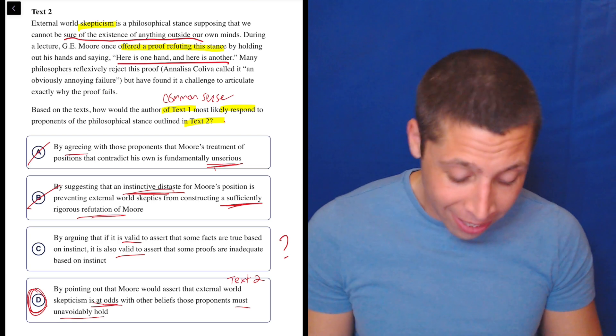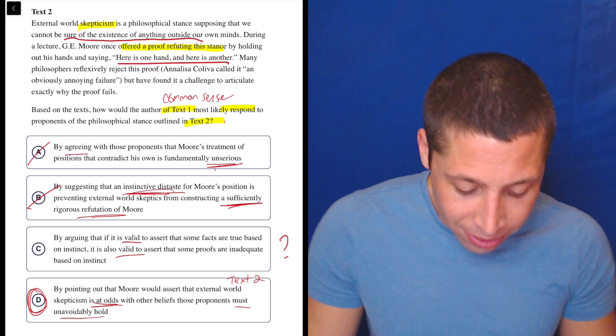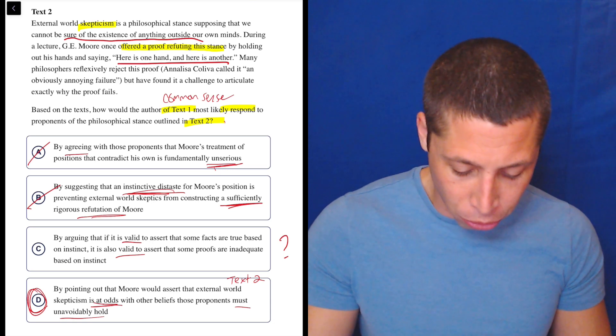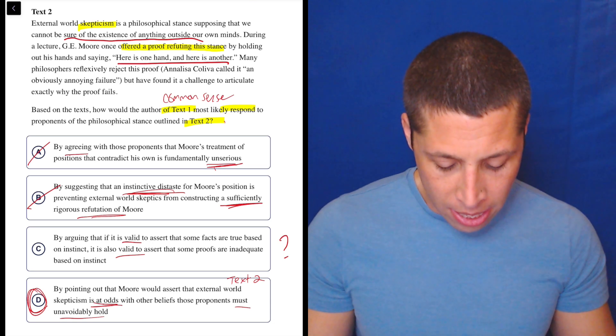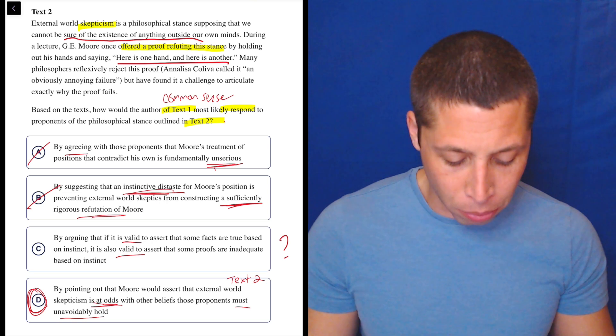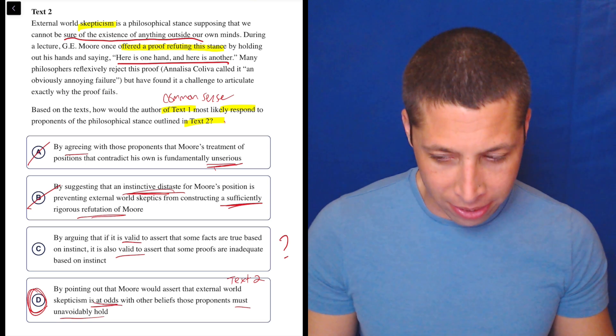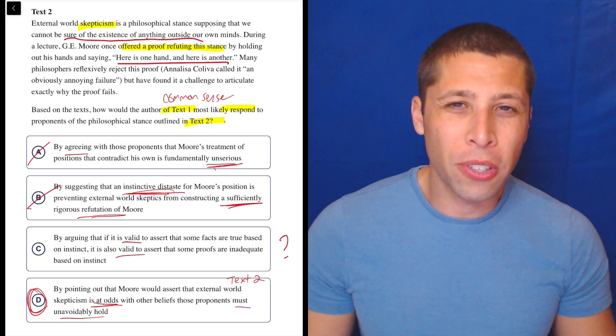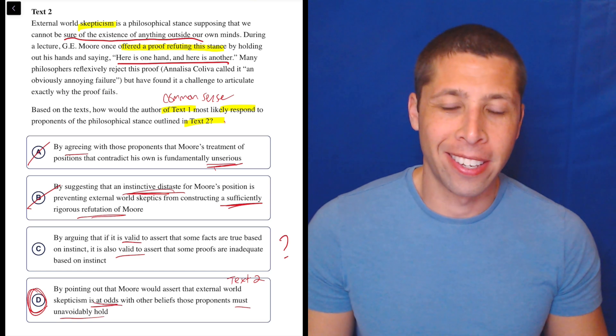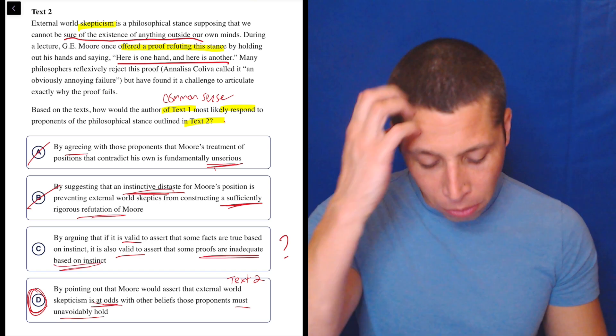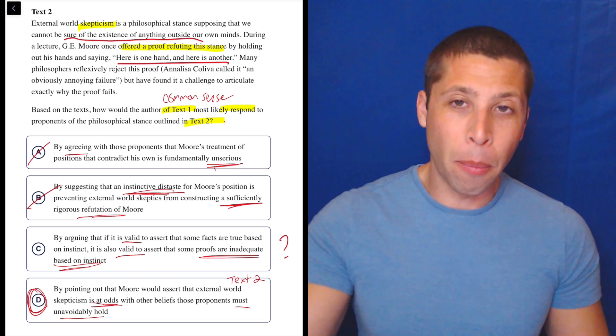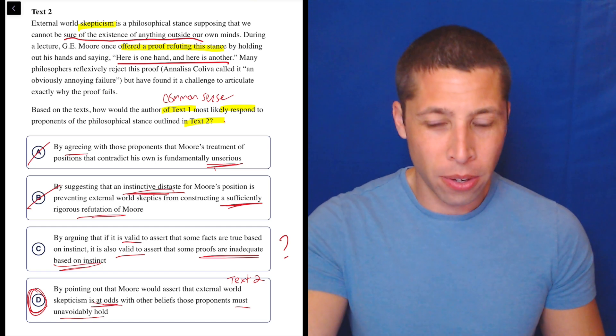I mean, let me try a similar thing with C. By arguing that if it is valid to assert that some facts are true based on instinct, meaning that you have hands or bodies or whatever, it is also valid to assert that some proofs are inadequate based on instinct. Some proofs are inadequate based on instinct. What does that even mean? I really don't know what this would mean. Some proofs are inadequate.